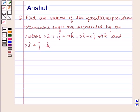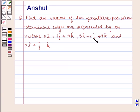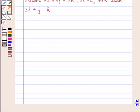Hello and welcome to the session. In this session, we are going to discuss the following question: Find the volume of the parallelepiped whose coterminous edges are represented by the vectors 5i cap plus 4j cap plus 10k cap, 3i cap plus 2j cap plus 4k cap, and 2i cap plus j cap minus k cap.